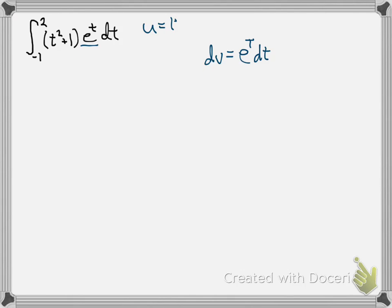And that leaves t squared plus 1 for our u. Then our v is automatic. It's e to the t. And our du is automatic, is the derivative of that, which is 2t dt.